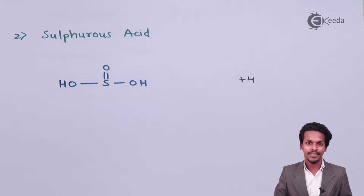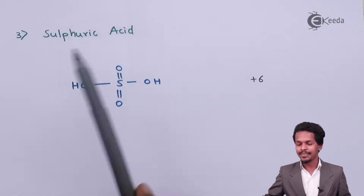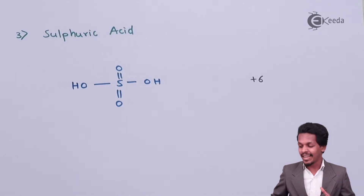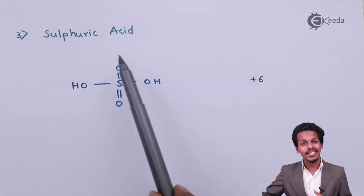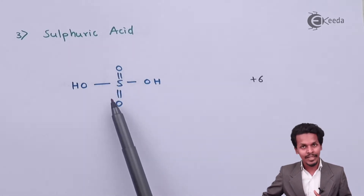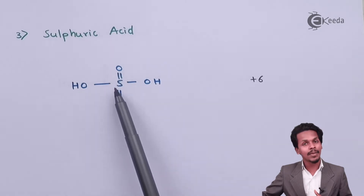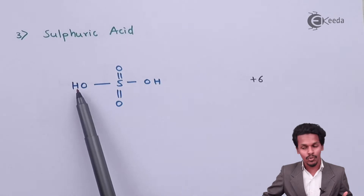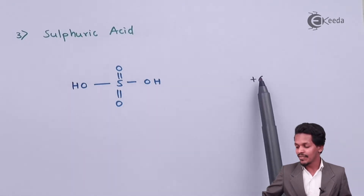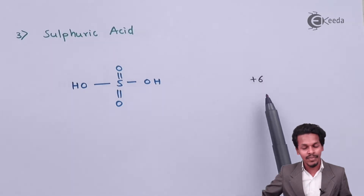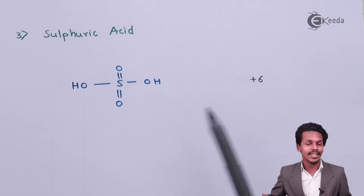The next is sulfuric acid, with the chemical formula H₂SO₄. In its structural formula, sulfur is attached to two oxygen atoms via double bonds, and the remaining two valencies are satisfied by OH groups. The oxidation state of sulfur here is plus 6.